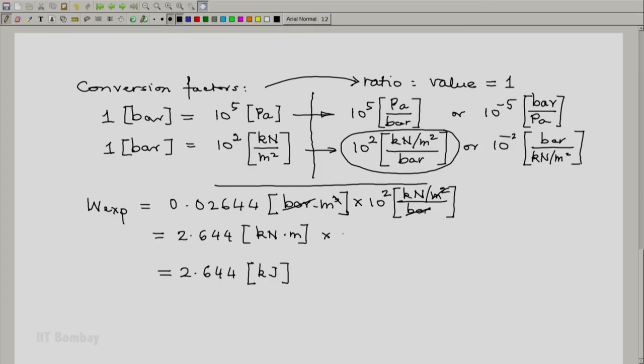If you want to be really perfect, you could multiply by 1, where the conversion factor is kilojoule per kilo Newton meter. Then kilo Newton meter cancels and we end up with this answer.